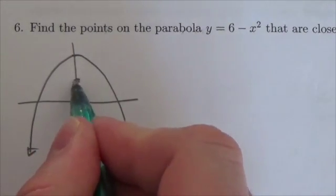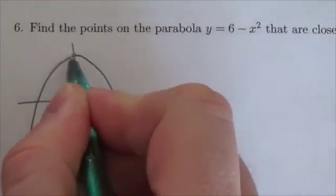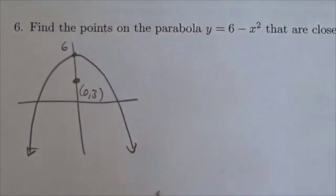So this is roughly what this is going to look like and then we're looking for the point there that's closest to the point (0, 3). So this is up here at six and there we go.